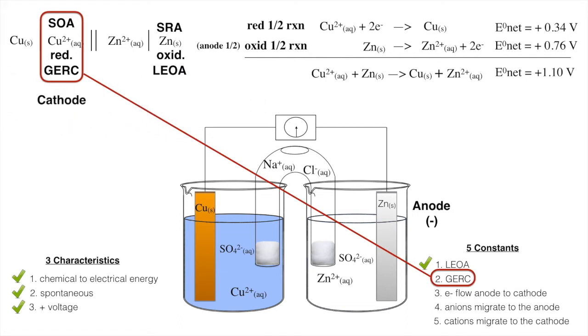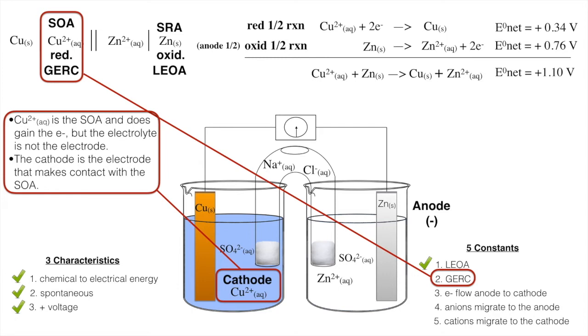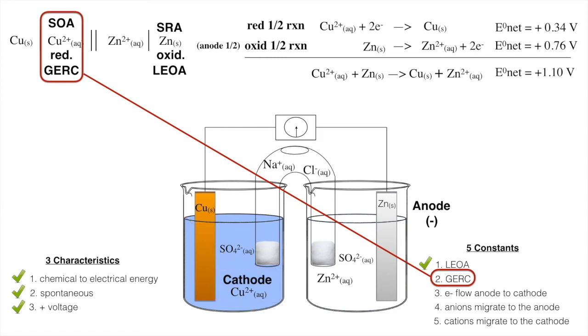So, gain of electrons reduction occurs at the cathode. Now be careful with this one. Copper 2 is the strongest oxidizing agent and does gain the electrons. But the electrolyte is not the electrode. So the ion is not the electrode. The cathode is the electrode that makes contact with the SOA. So Cu2 positive is the SOA, but the electrode is actually the copper solid. Now we'll learn a little bit more about that when we get into the flow of the electrons here. The cathode is the positive post on what we all think of as a battery. And the reduction half reaction is the cathode half reaction. That's our Leo Anderson's a bit of a jerk.